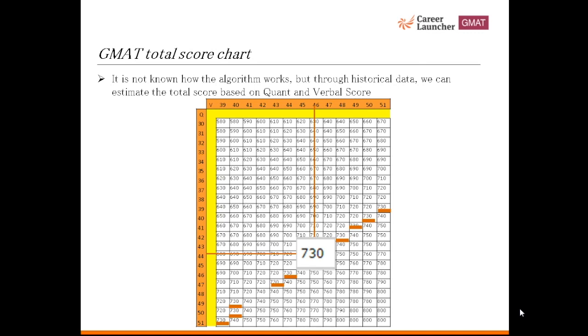Notice that there are many 730s in the chart. This is where this chart becomes most useful. You can be better at verbal than in quant. You can use this chart to find the best combination of two sectional scores which you can achieve to reach your target score.